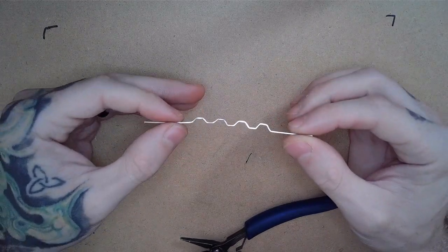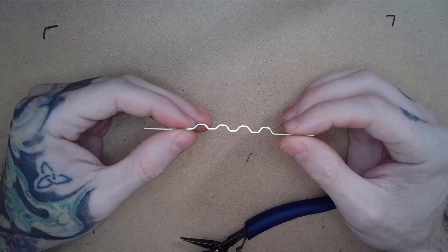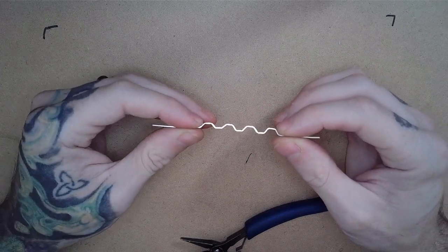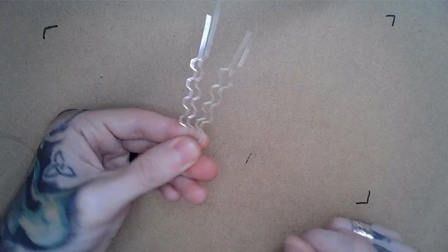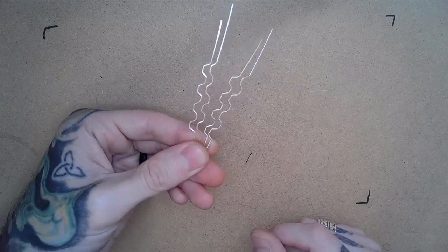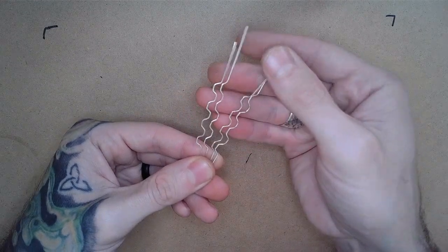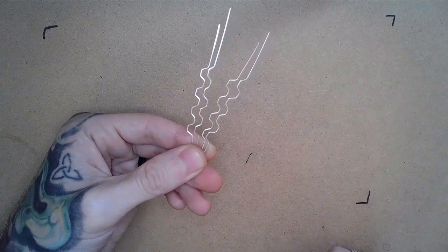Now that I have the first wire ready to go, I'm going to go ahead and repeat the same process for my other remaining three square wires. Once I have all four of my wires bent to the pattern, I can begin weaving it together.